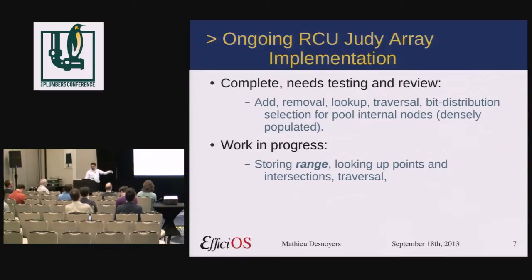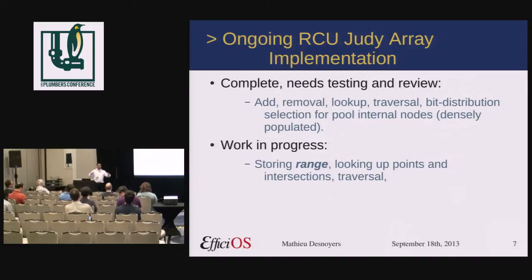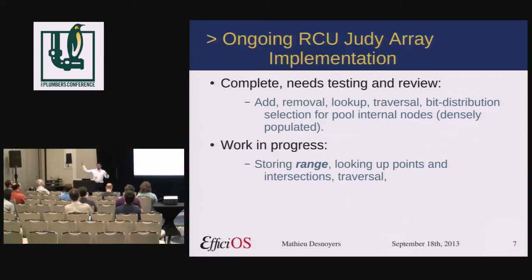What was ongoing future work last year has been implemented and tested. It works, but needs more testing. The current work in progress is storing range information — so rather than just having keys you can look up, you can basically look up what intersects a specific range or a specific point. That's very interesting. If we want to use that to store memory mapping information, that would not require a map semaphore to protect lookups. The lookups could be done by RCU, and the updates could even be scalable since the locks are distributed within the data structure.